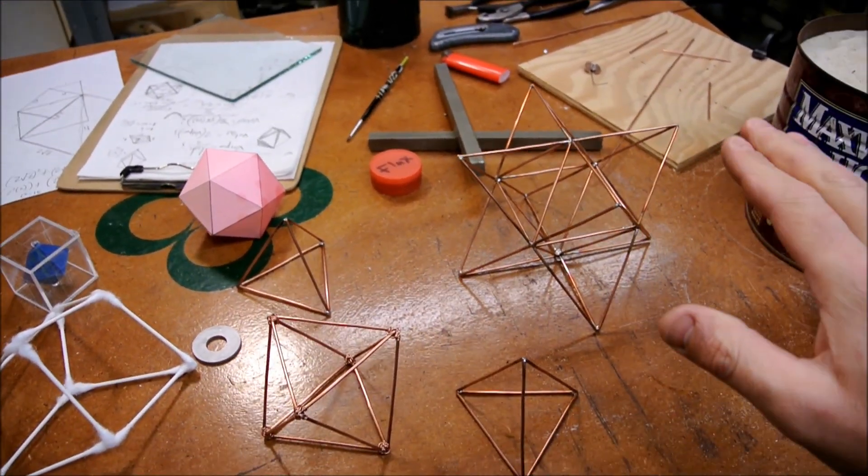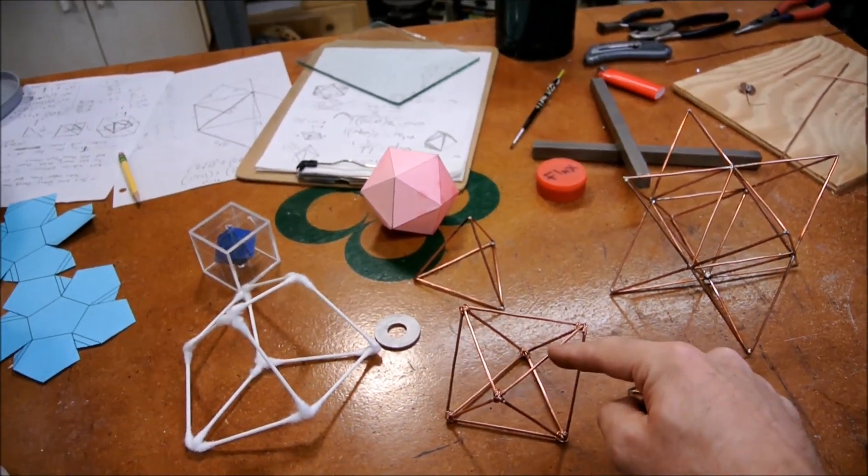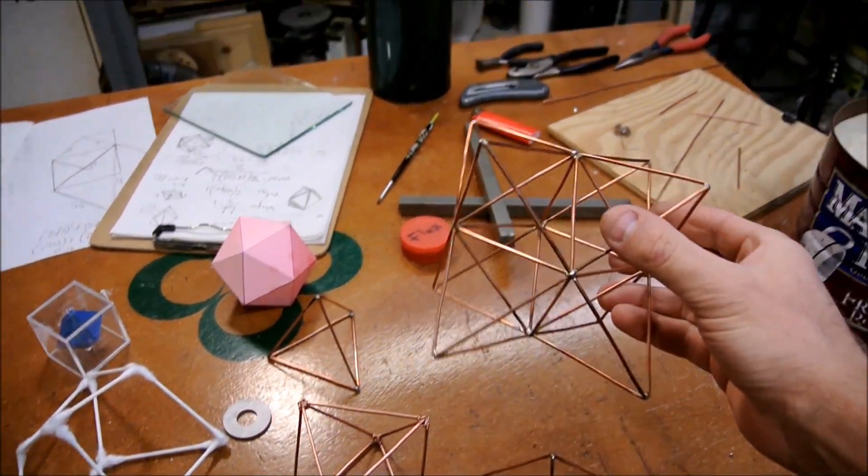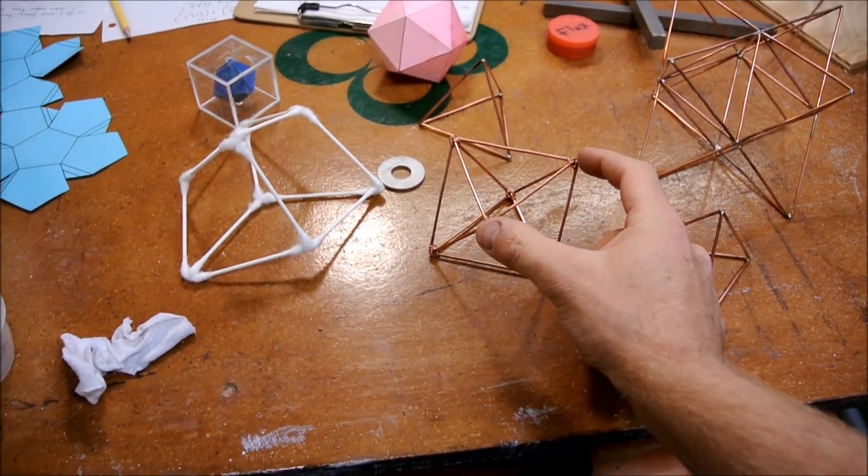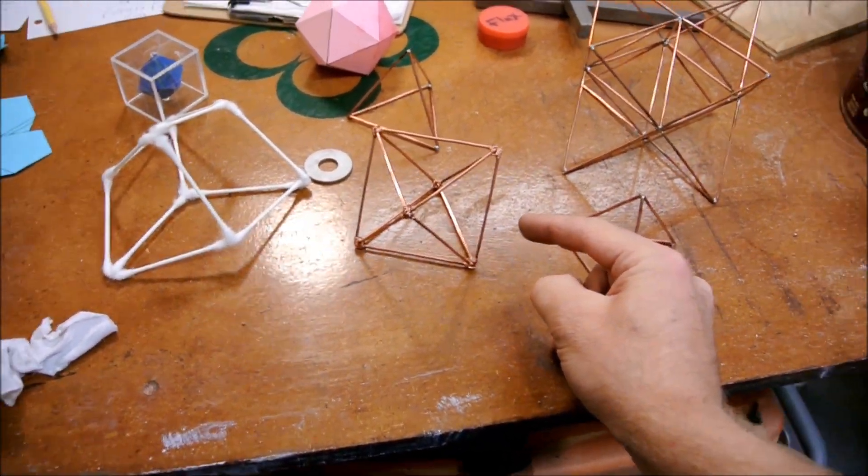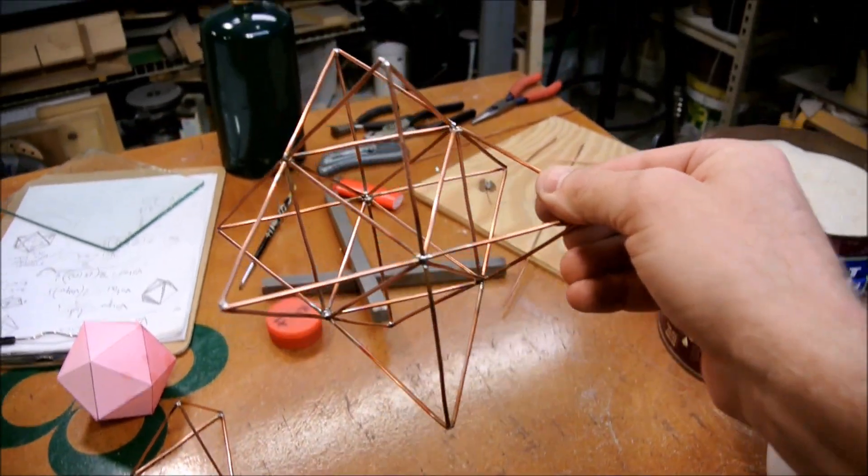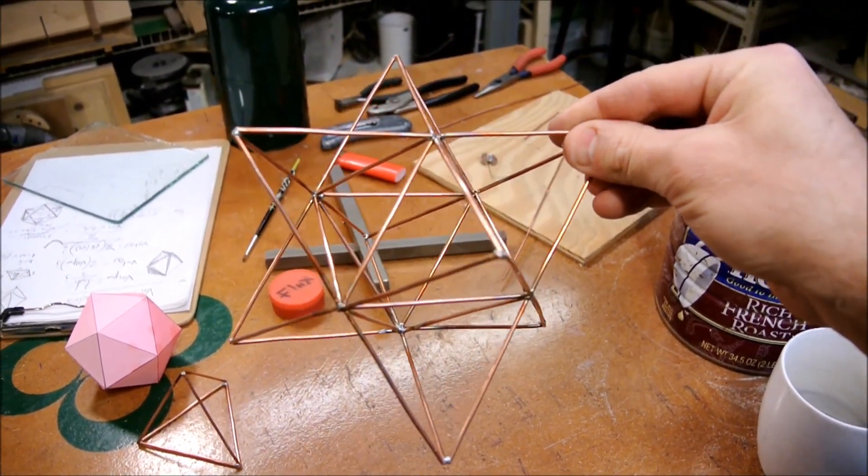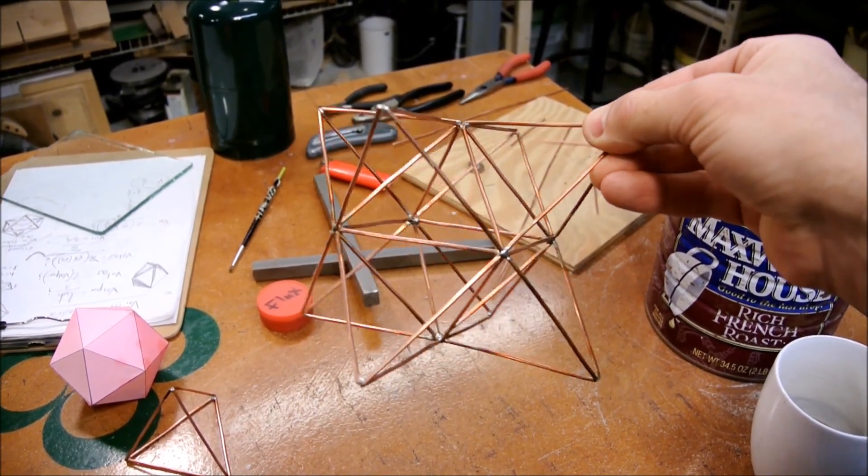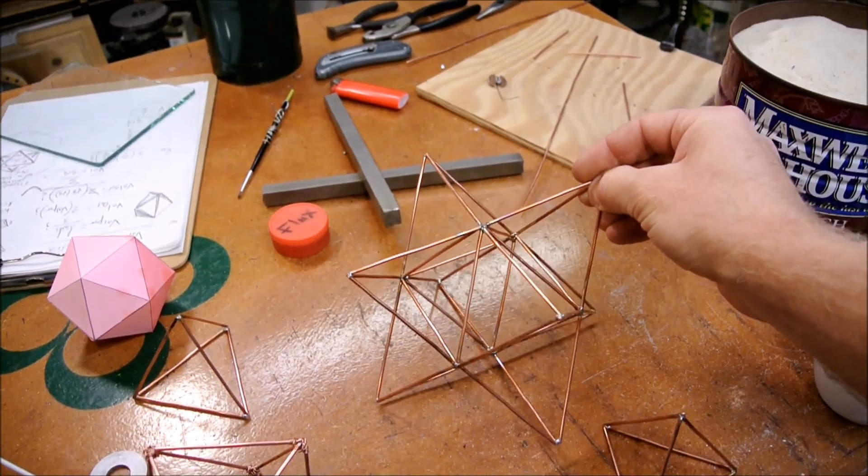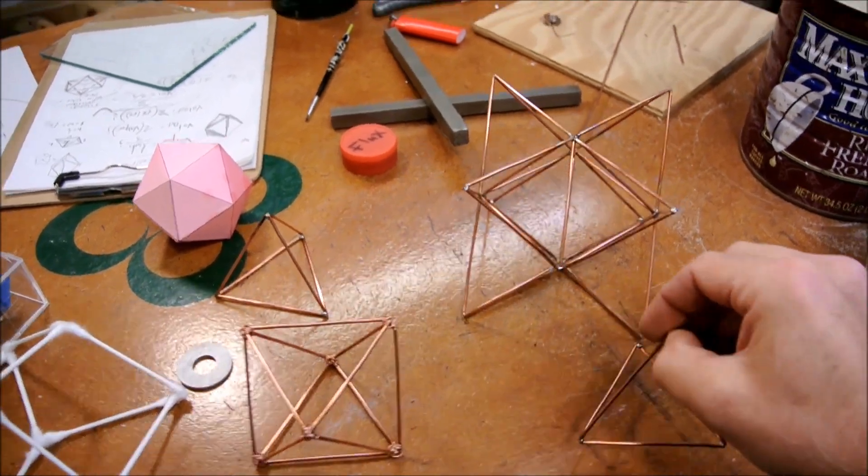This is the stellated octahedron. And what that means is that you take each of the faces of the octahedron and you extend them in such a way so as to draw them out to a point. And if you look in here you can see an octahedron in there, and then there's a tetrahedron attached to each one of the faces.